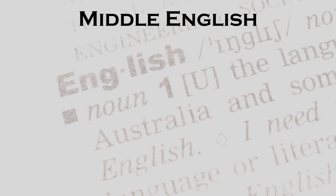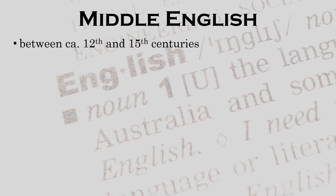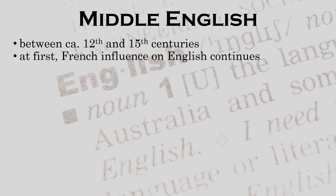In the development of English, we have come to the second stage: Middle English, usually situated between the 12th and 15th centuries. The Norman dynasty had come and gone, but the Plantagenets were still francophone, and as such the influence of French on English continued. Yet things were changing, and English was getting stronger and more influential again.